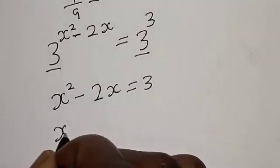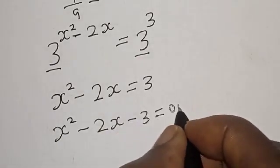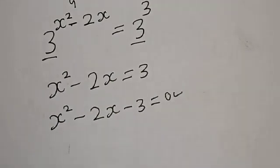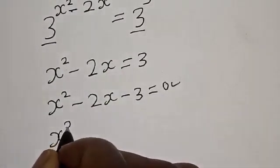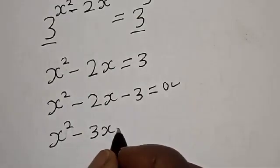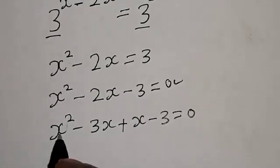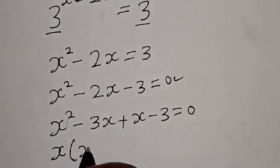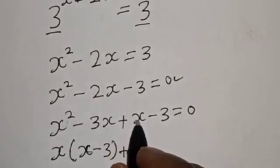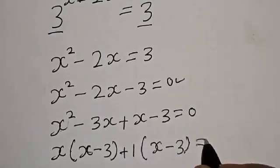Now s squared minus 2s minus 3 is equal to 0. This is a quadratic equation. Let's solve using the factorization method: s squared minus 3s plus s minus 3 is equal to 0. Factoring out s from the first two terms gives s times (s minus 3), plus 1 times (s minus 3) is equal to 0.